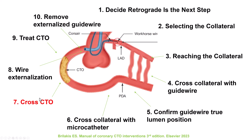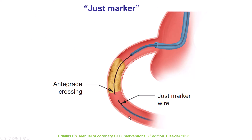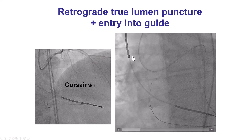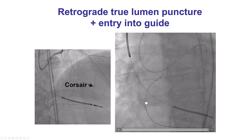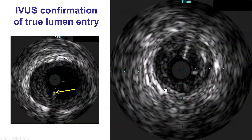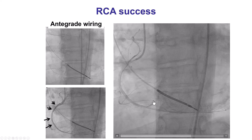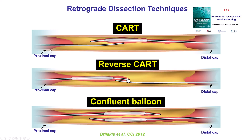Step number seven is to actually cross the CTO. The simplest way is to use the retrograde guidewire as a marker of the location of the distal truelumen and then cross the CTO in the antegrade direction — this is called the just marker technique. Another way is to cross from the distal truelumen to the proximal truelumen, called retrograde truelumen puncture. This can work sometimes but is more successful in fairly short CTOs; in long CTOs the retrograde guidewire quite often goes into the extraplaque space. An example shows a fairly short CTO of the right coronary artery where the retrograde wire easily advances into the antegrade guide catheter, confirmed with intravascular ultrasound in the proximal truelumen, with a nice final result after stenting.